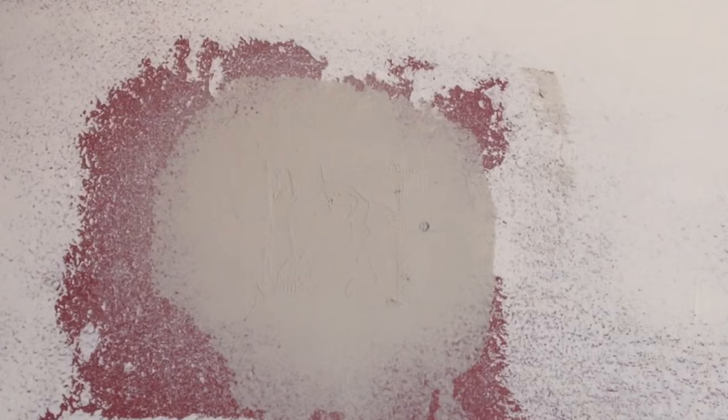All right there's the first coat. Pretty smooth. Again that's a 20 minute quick setting joint compound I used over the fiberglass mesh tape.